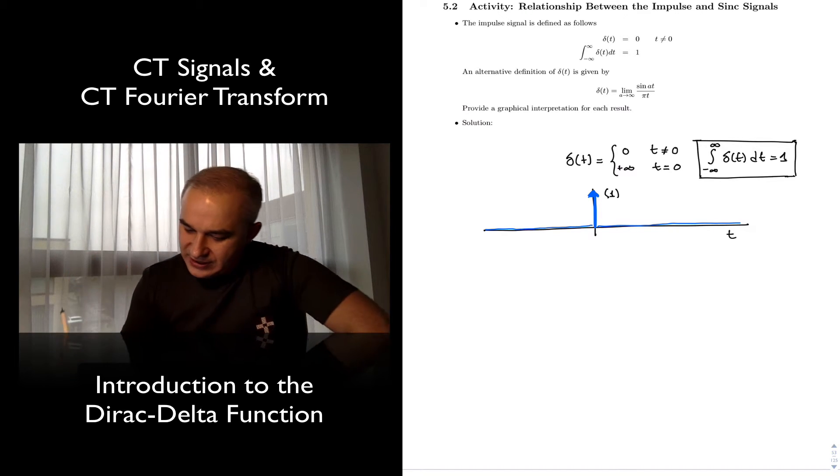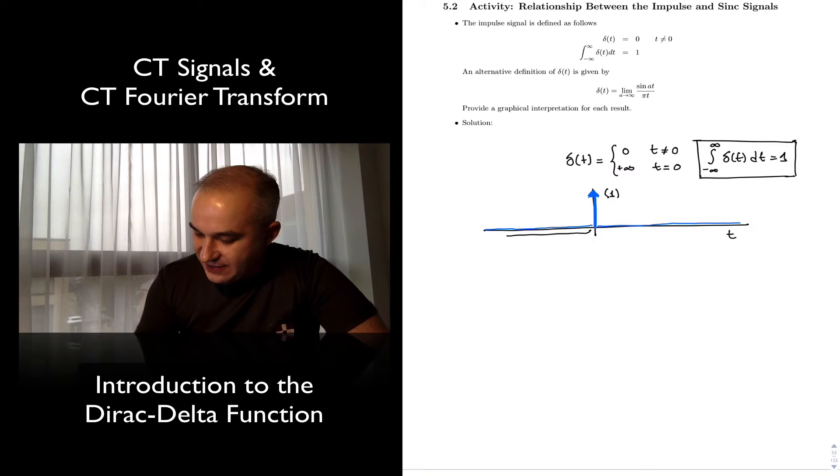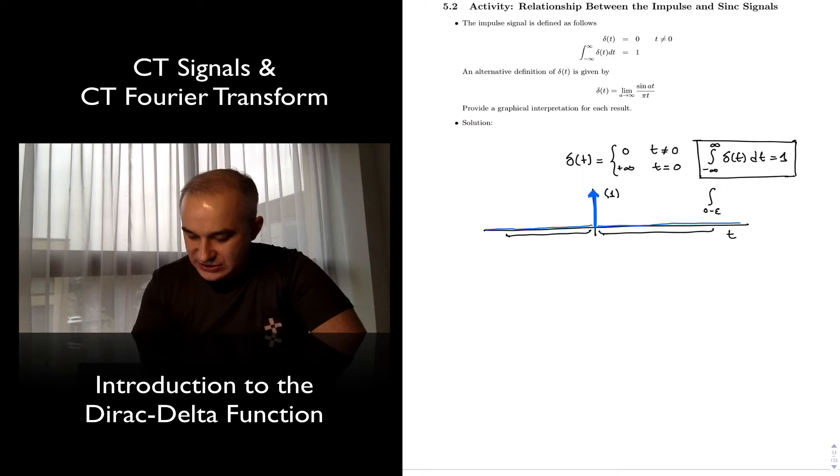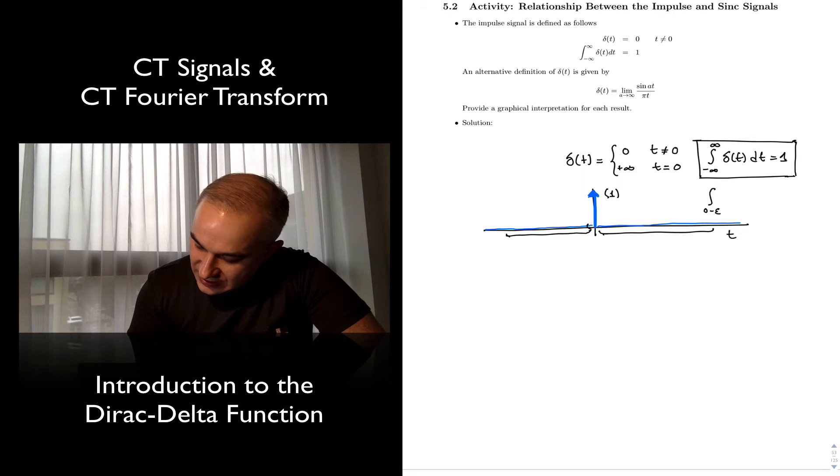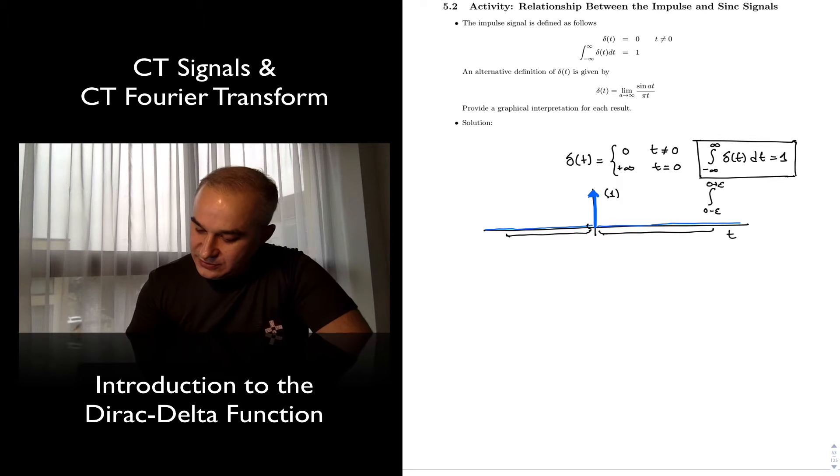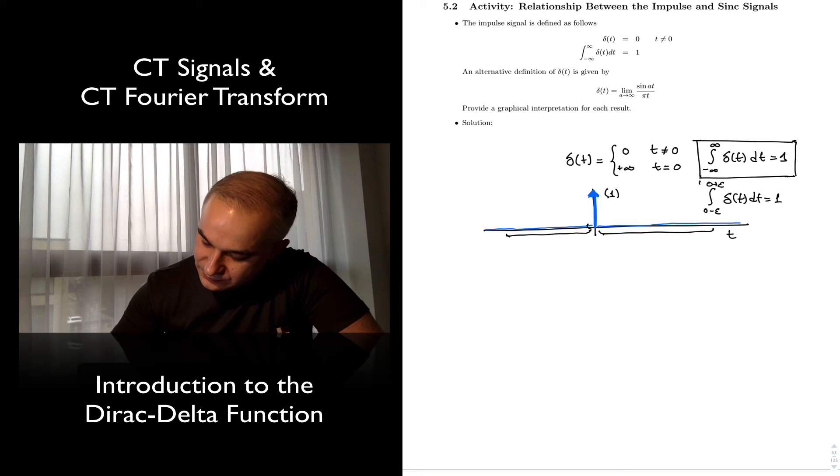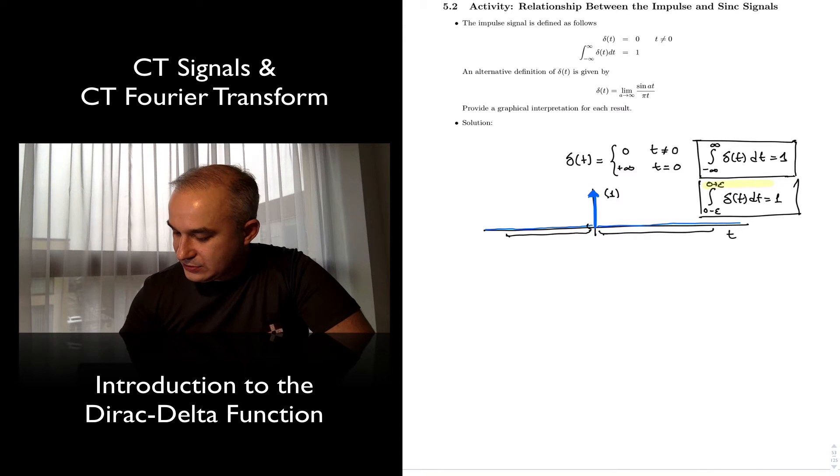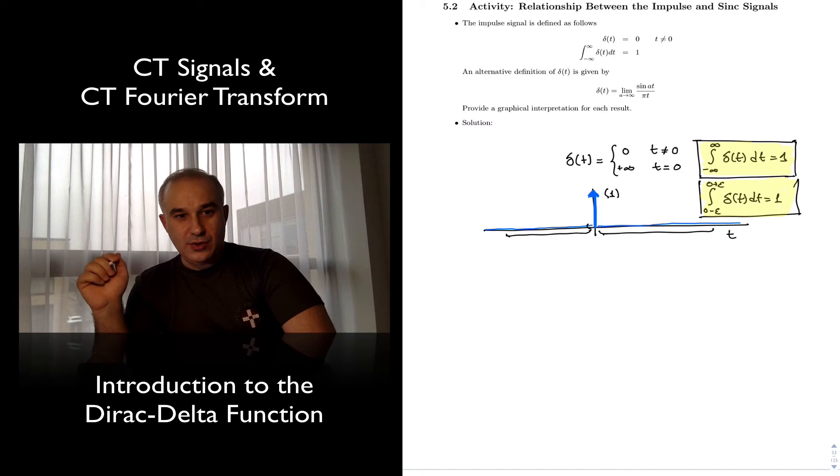You can also think that since this is zero everywhere here, when you are adding this integral, really that is adding just zero, so in reality the integral of zero minus an epsilon, small epsilon here, and zero plus an epsilon of delta of t, dt is equal to 1. So as long as you catch the impulse, the area is 1.